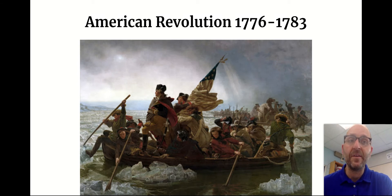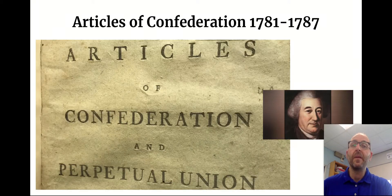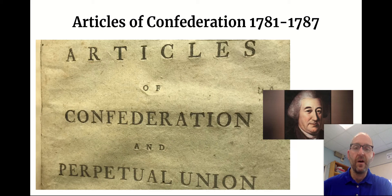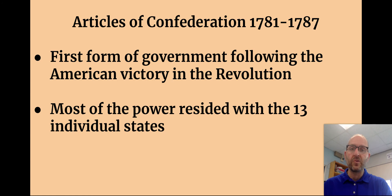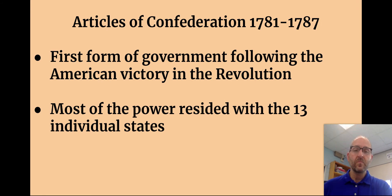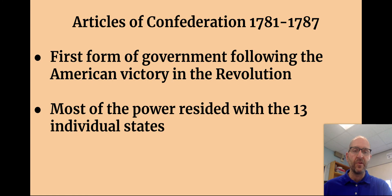The American Revolution lasted from 1776 to 1783. Once the revolution was over, a new government was needed. The colonists were already developing a new government called the Articles of Confederation, which went into effect when the Treaty of Paris was signed. It was primarily focused on states' rights — really just a firm league of friendship. Most power resided with the 13 individual states. It ultimately failed, and rather than fix it, they decided to start over.